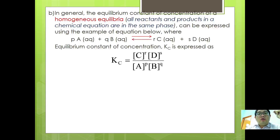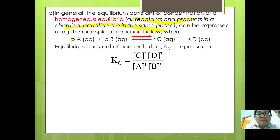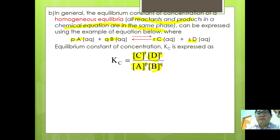In a homogeneous equilibrium, all reactants and products have the same state of matter. For example, if you have aA + bB ⇌ cC + dD, Kc can be expressed as [C]^c × [D]^d divided by [A]^a × [B]^b.